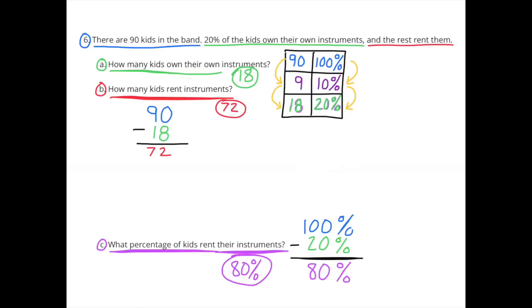Number 6. There are 90 kids in the band. 20% of the kids own their own instruments, and the rest rent them. A, how many kids own their own instruments? 100% of the kids in the band is 90. 10% of 100 is 10%, and 10% of 90 is 9. I know that 20% is 2 times greater than 10%, so 9 times 2 is 18. There are 18 students in the band who own their own instruments.